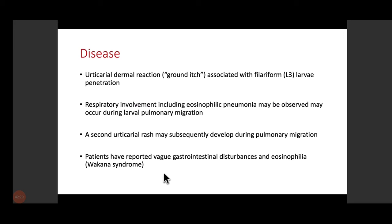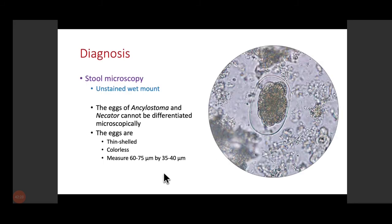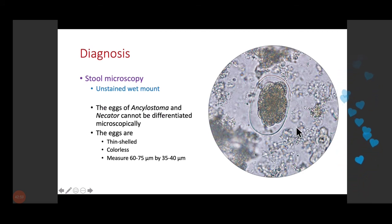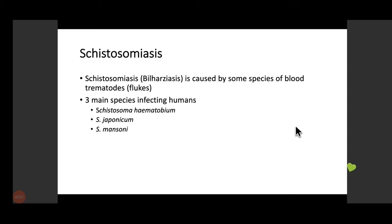Diagnosis: stool examination to look for thin-shelled, colorless eggs with multiple blastomeres, 60–75 by 35–50 micrometers. At this stage the eggs cannot be differentiated as Necator americanus or Ancylostoma duodenale. Treatment and prevention are the same as for whipworm.